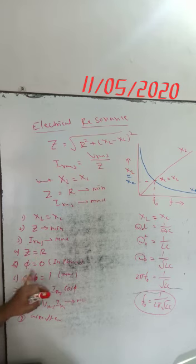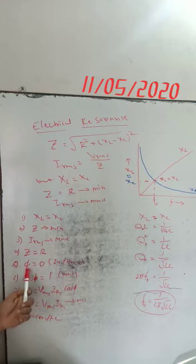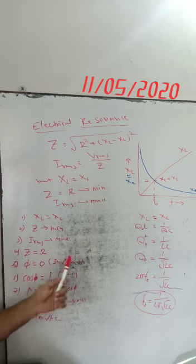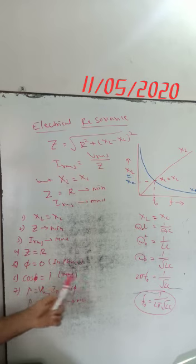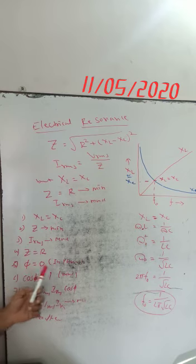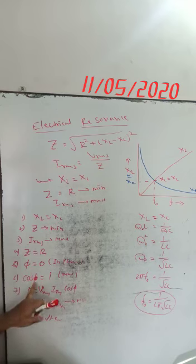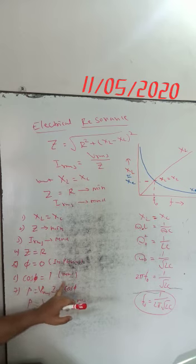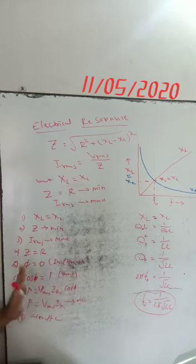The fifth feature: in the resonance circuit, the phase difference between voltage and current is zero — voltage and current must be in phase. Since voltage and current are in phase, the power factor cos φ equals 1. So power factor must be maximum in the resonance circuit.